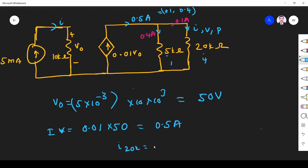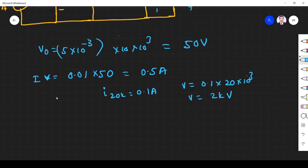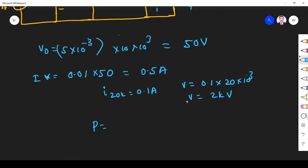So here I found what is the current flowing through 20K, 0.1 ampere. So I we found. From that we can find V is equal to I into R. 0.1 into 20 into 10 power 3. So it is 2 kilo volt V. Once we find V and I. What is P?